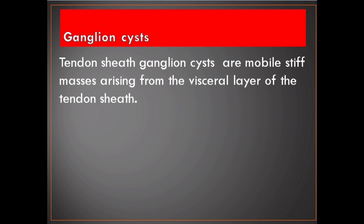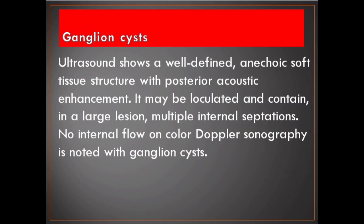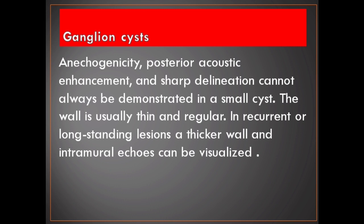Tendon sheath ganglion cysts are mobile stiff masses arising from the visceral layer of the tendon sheath. Ultrasound shows a well-defined anechoic soft tissue structure with posterior acoustic enhancement. It may be loculated and contain, in a large lesion, multiple internal septations. No internal flow on color Doppler sonography is noted with ganglion cysts. Anechogenicity, posterior acoustic enhancement, and sharp delineation cannot always be demonstrated in a small cyst. The wall is usually thin and regular. In recurrent or long-standing lesions, a thicker wall and intramural echoes can be visualized.